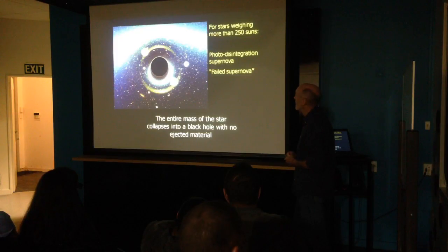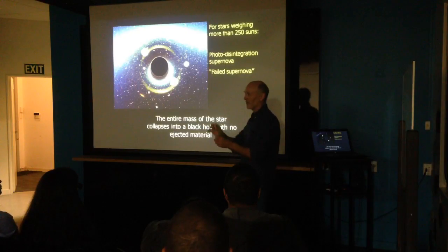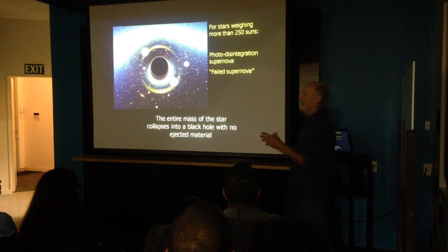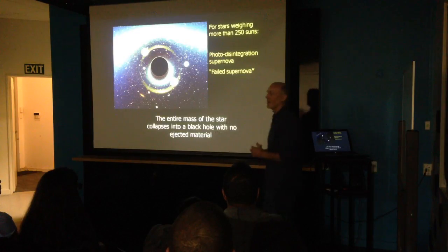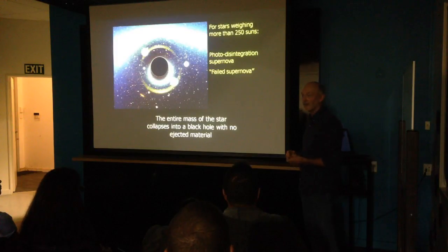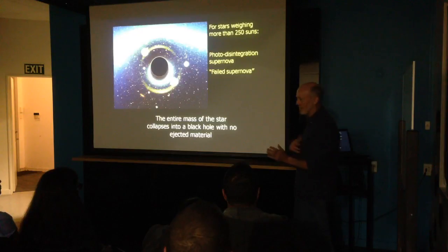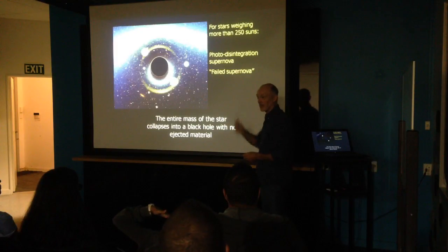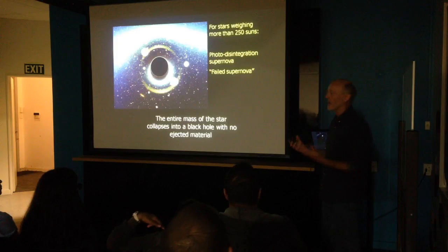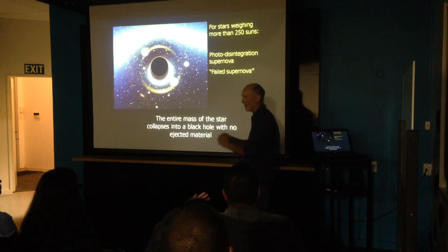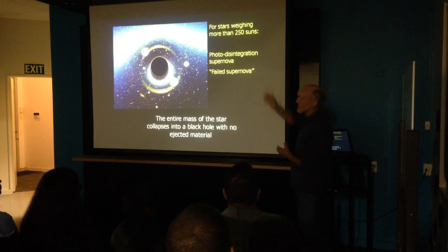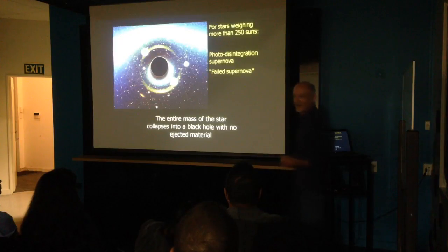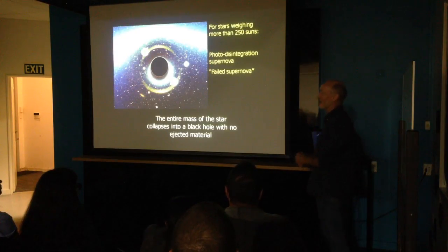Some astronomers are looking for these failed supernovae — instead of looking for a new bright object in a galaxy, they're looking at galaxies that have large massive red supergiants, the brightest objects in their galaxy, and re-imaging them every few months. They now have at least one case where one of those really luminous red stars vanished between pictures, and despite the deepest Hubble images possible, they can't see any remnant. The implication is that this is one of these cases — what they call a failed supernova, where the star collapses entirely into a black hole with no material ejected.